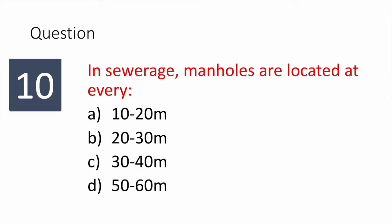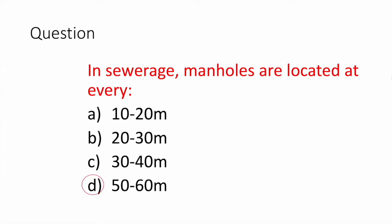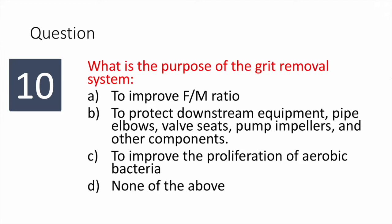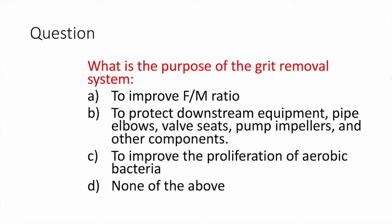In sewage systems, manholes are located at every 50 to 60 meters. The purpose of the grit removal system is removing grit and coarse material, which is very important to protect the equipment of the wastewater treatment plant.